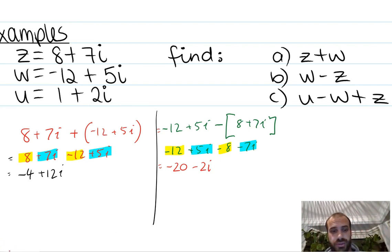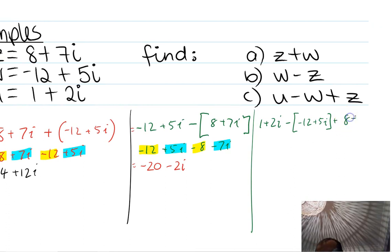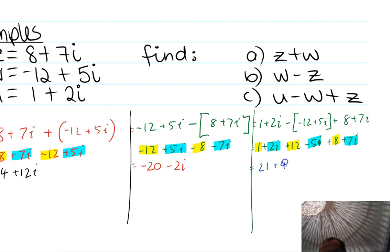If you haven't done part c yet, definitely pause it and try it out. Otherwise: u minus w plus z is 1 plus 2i minus the bracket negative 12 plus 5i, plus 8 plus 7i. Being careful with the bracket: 1 plus 2i plus 12 minus 5i plus 8 plus 7i. So 1 plus 12 plus 8 is 21, and 2i minus 5i plus 7i is positive 4i.